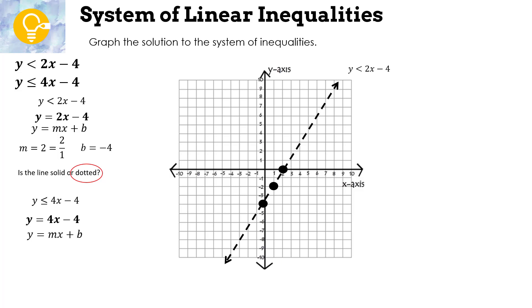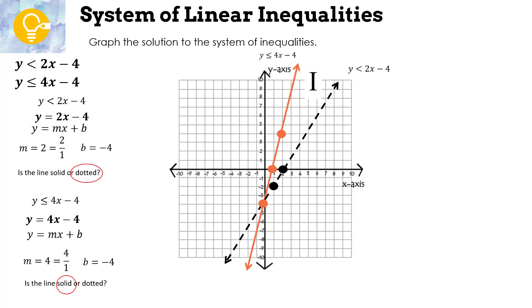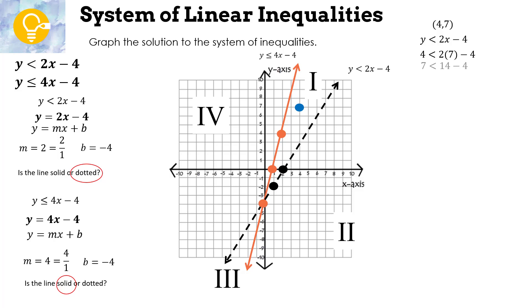For the second, y ≤ 4x − 4: already in slope-intercept form, slope = 4 (written as 4/1), y-intercept = −4. Graph −4, go up 4 over 1. This one is solid. Test region 1 with (4, 7): first inequality gives 7 < 2(4) − 4 = 4 — no wait: 2(4) − 4 = 4, so 7 < 4 ... actually checking again — 7 < 10, true. Second: 7 ≤ 4(4) − 4 = 12, true. Region 1 is our solution.